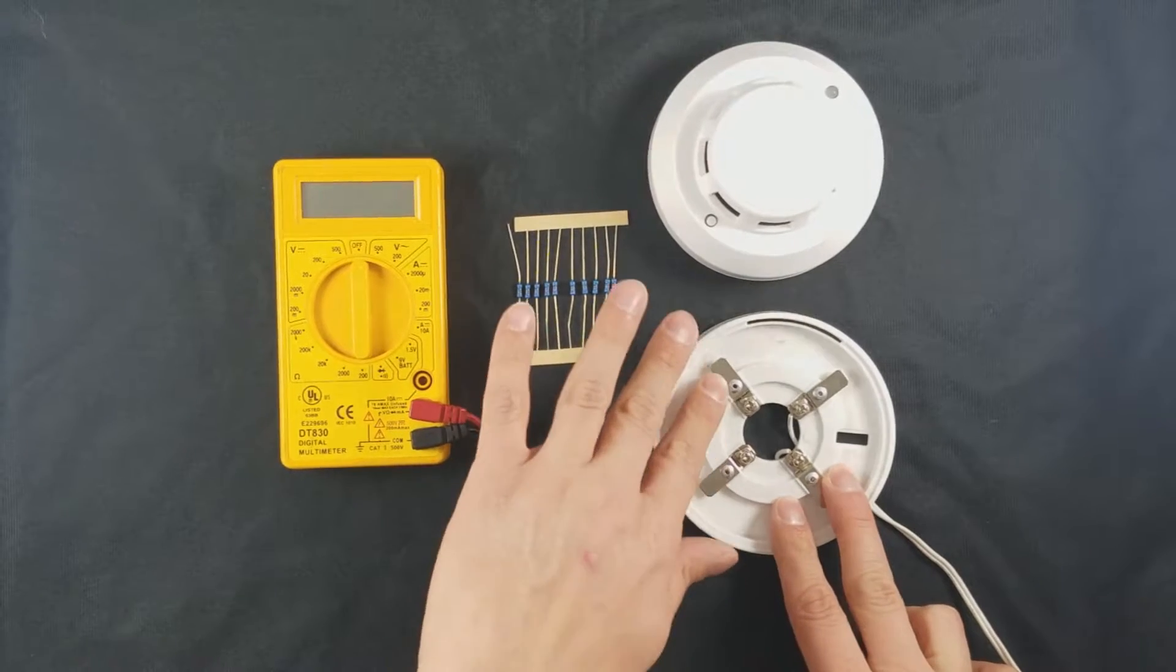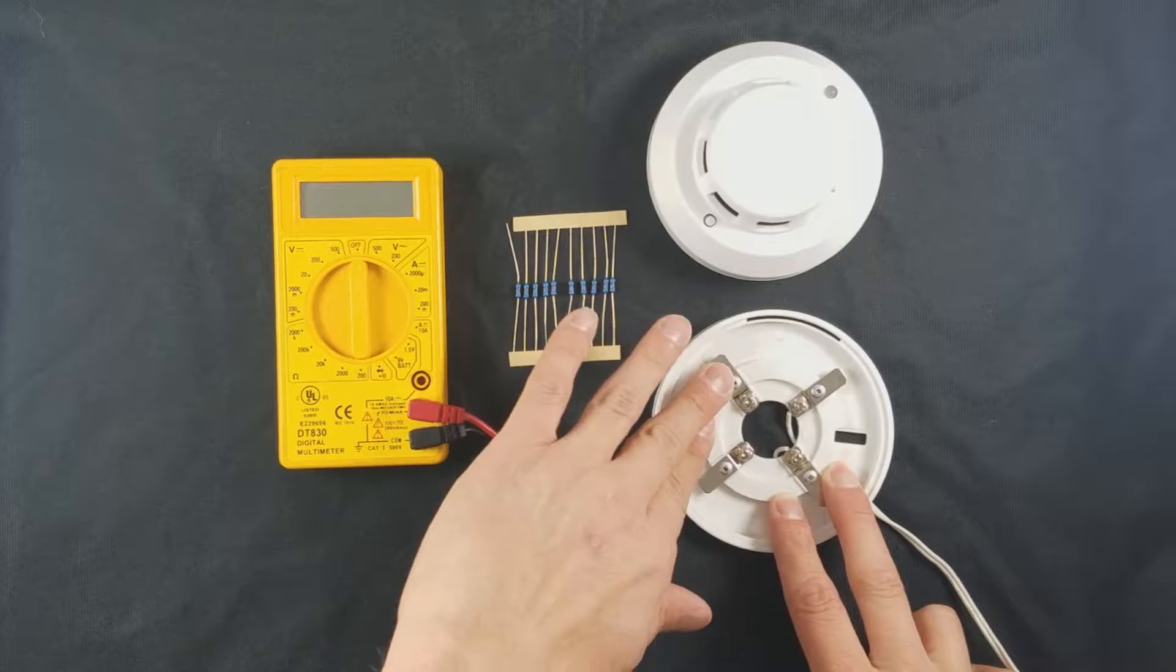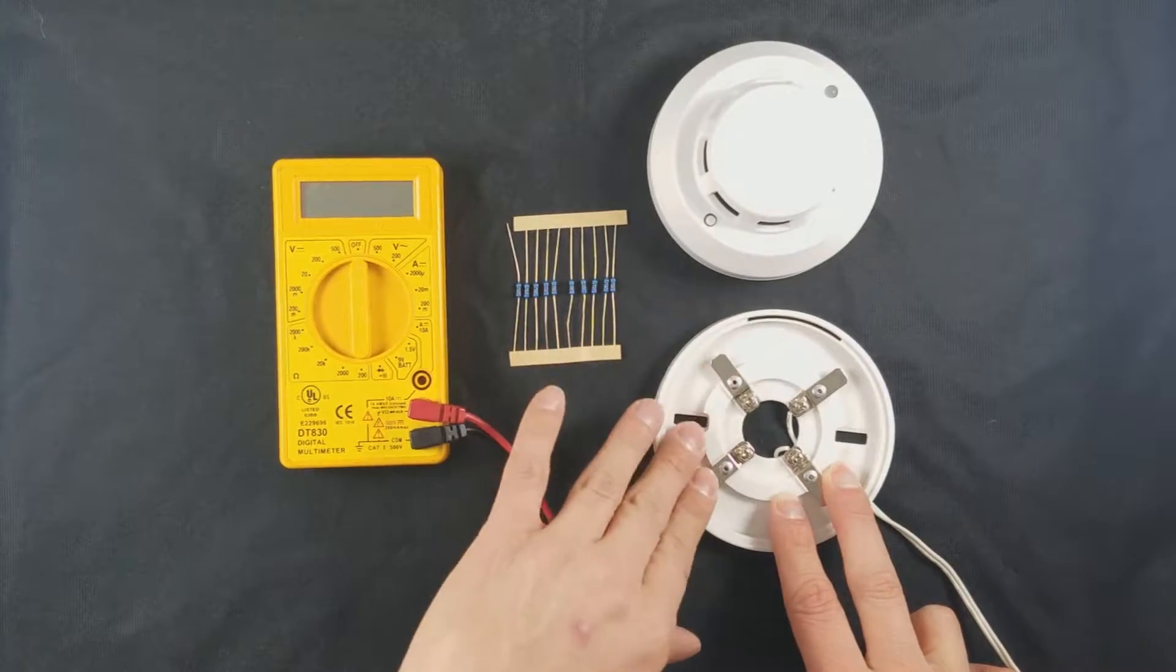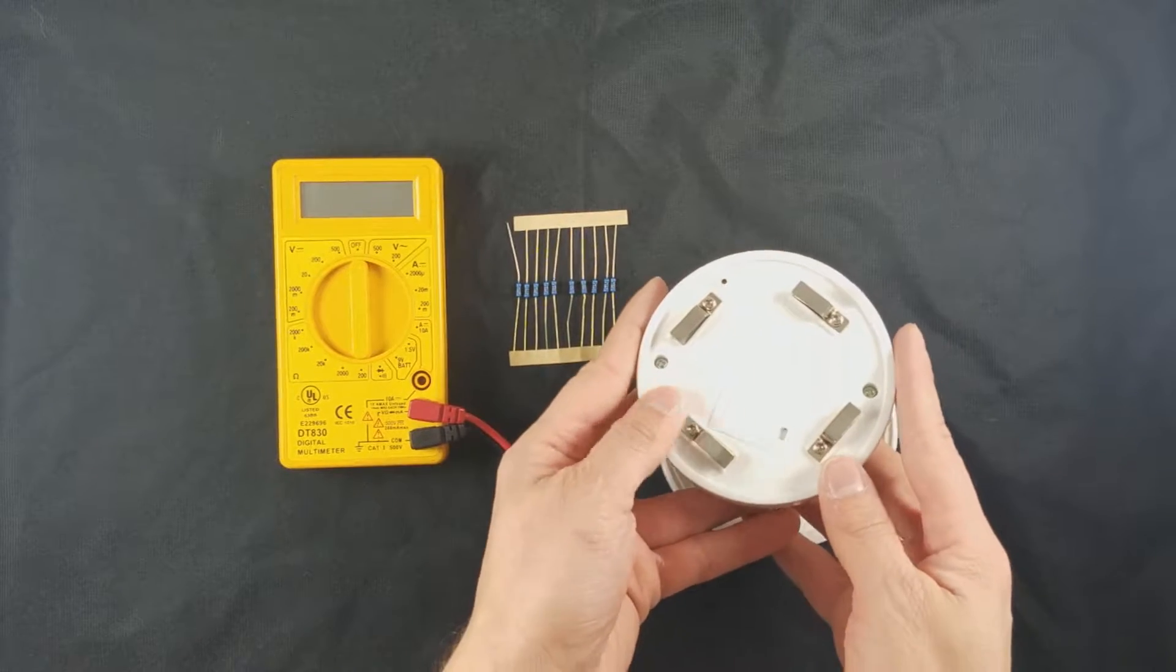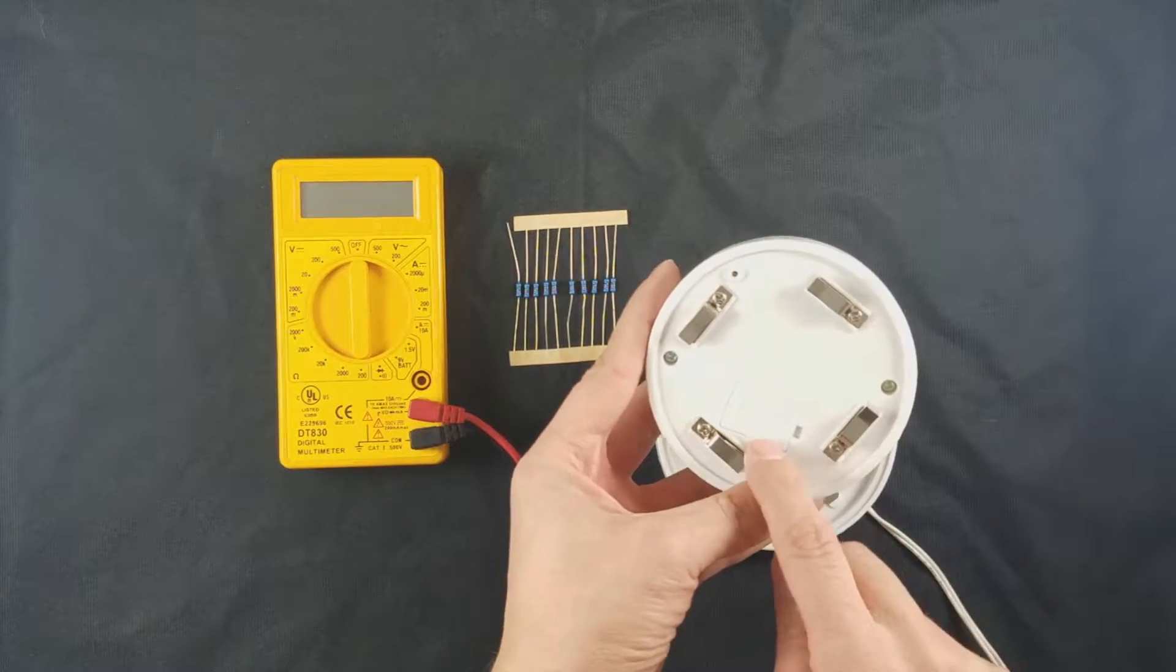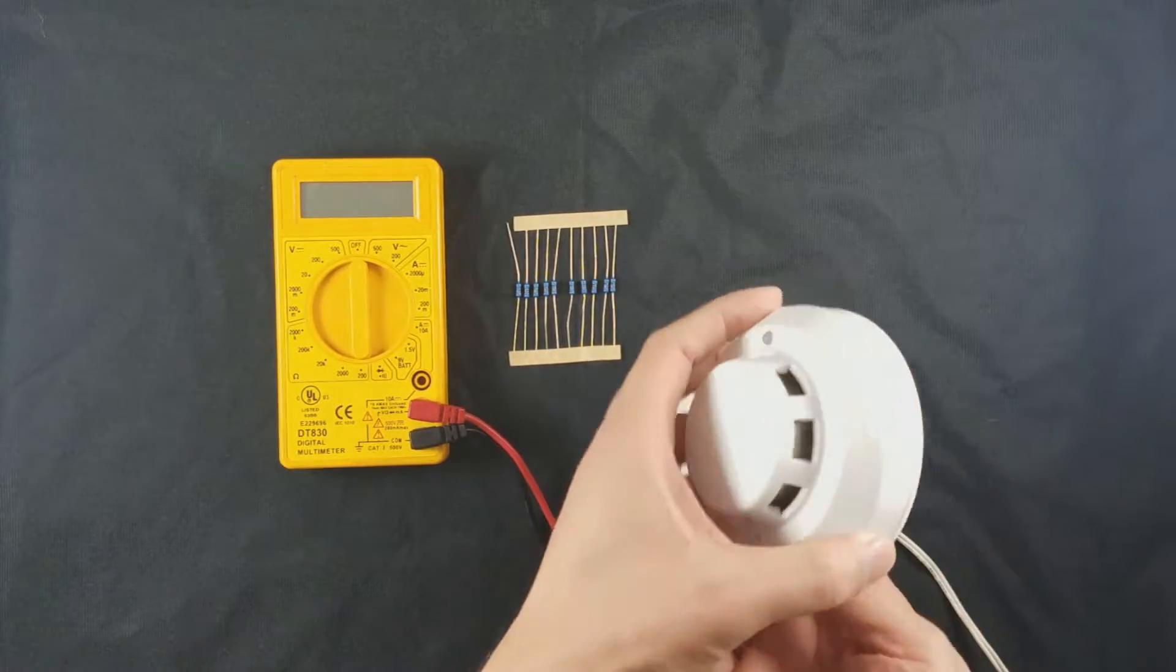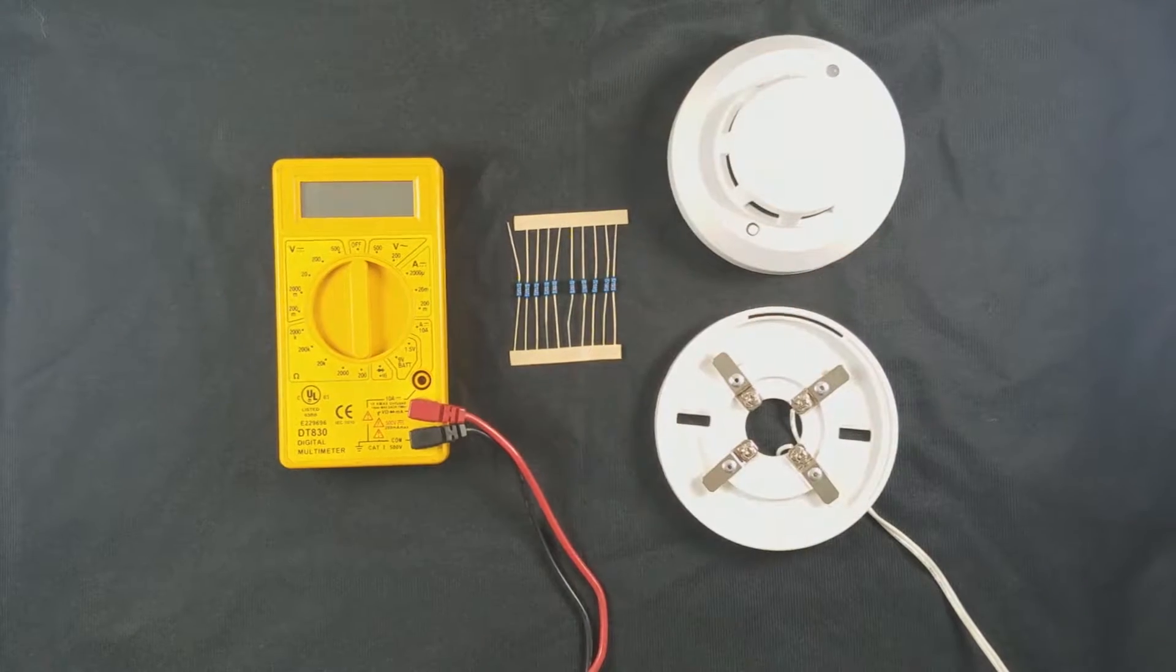Terminals 2 and 3 are your relay circuit, which can be normally open or normally closed. There's a selector on the back of the smoke detector under this cover where you can choose between normally open or normally closed.